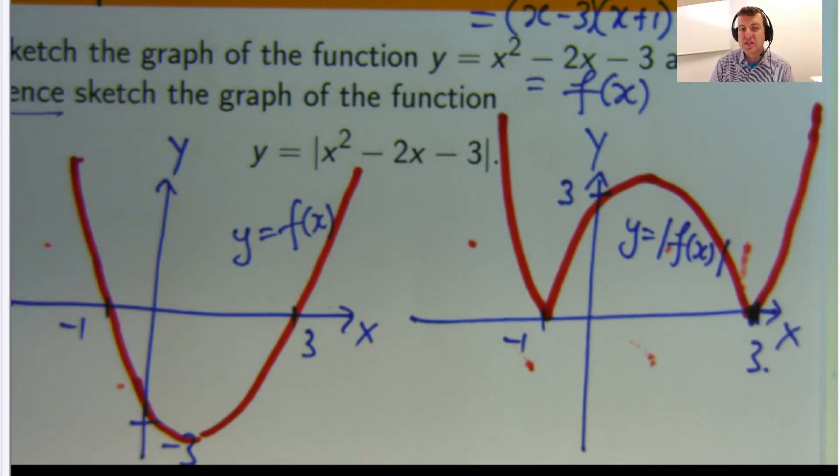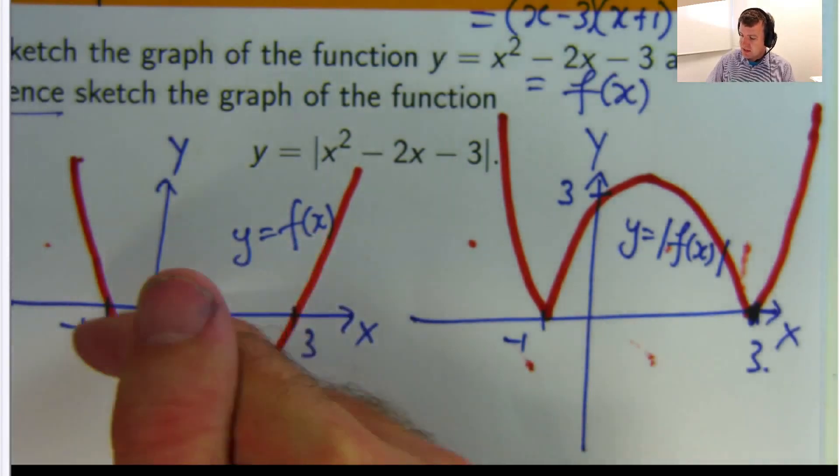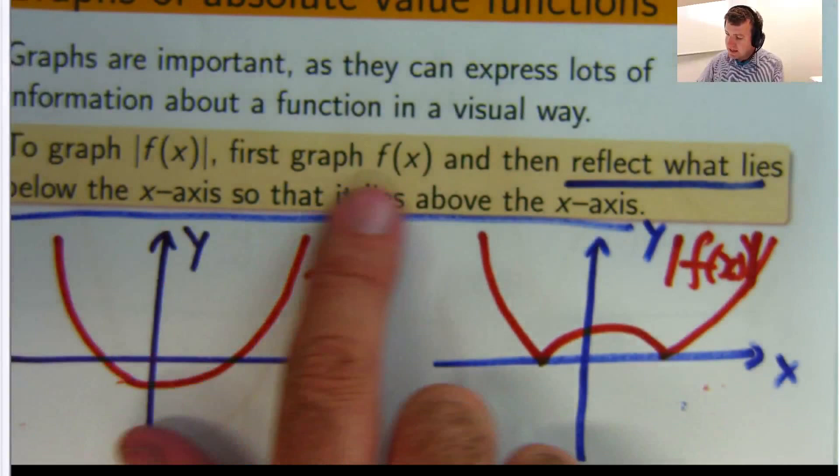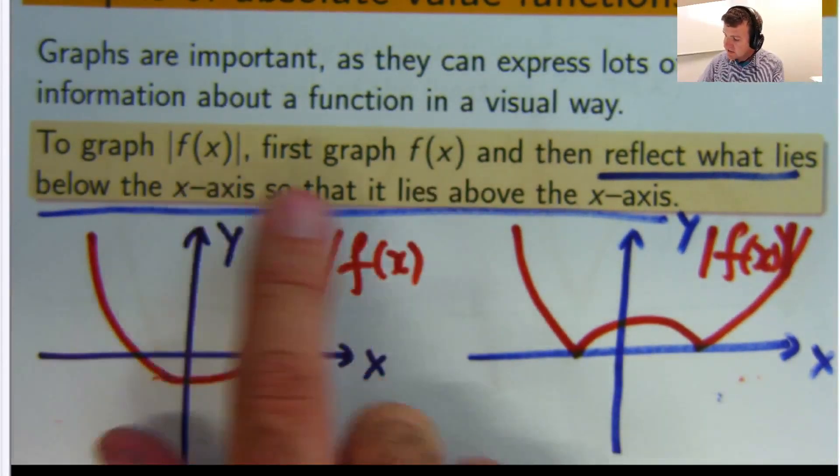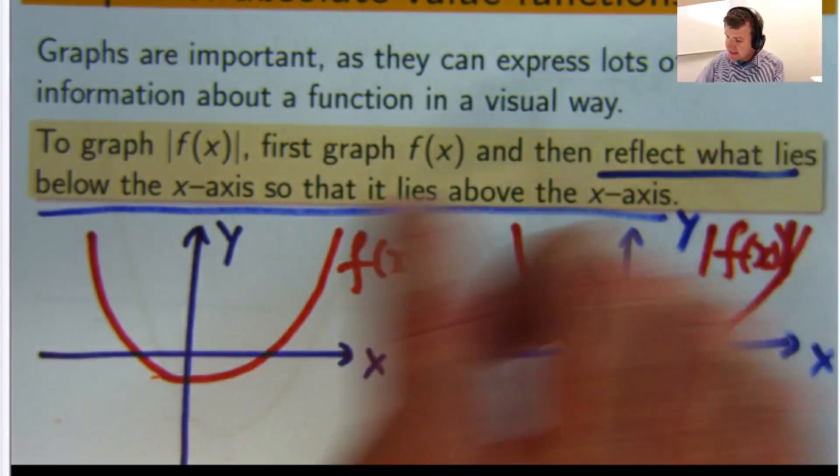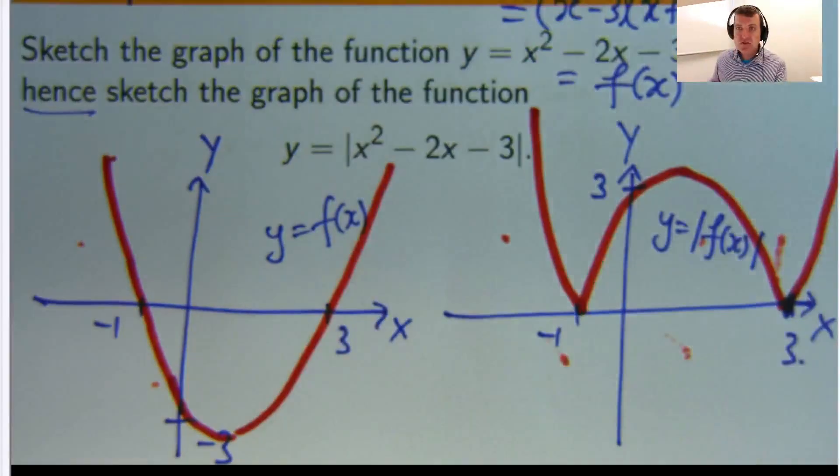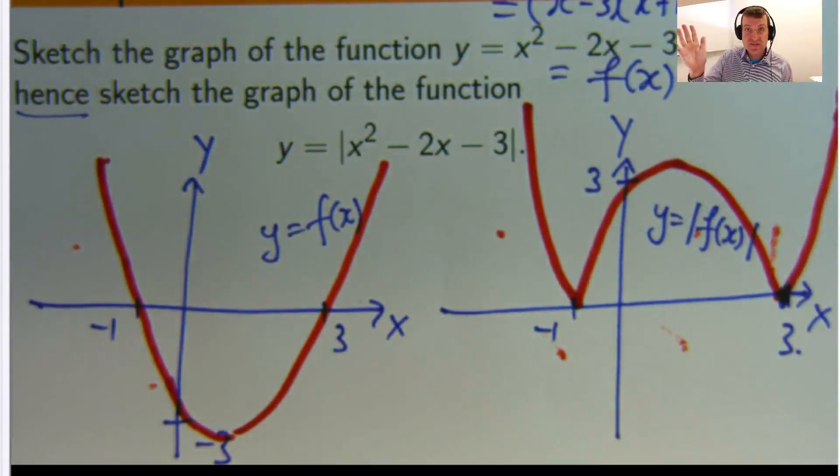This is a technique that you can use for lots of different problems. This was a simple one because it involved a quadratic, a parabola where we just flipped the negative part of the graph. So just to sum up, absolute values have to do with distance. If you're given a function and you want to graph the absolute value of that function, first graph this bit, then reflect in the x-axis whatever lies below the x-axis so it lies above the x-axis. I'll be doing some more examples as we go along. I hope you enjoyed this video. Thanks for tuning in and see you soon. Bye.